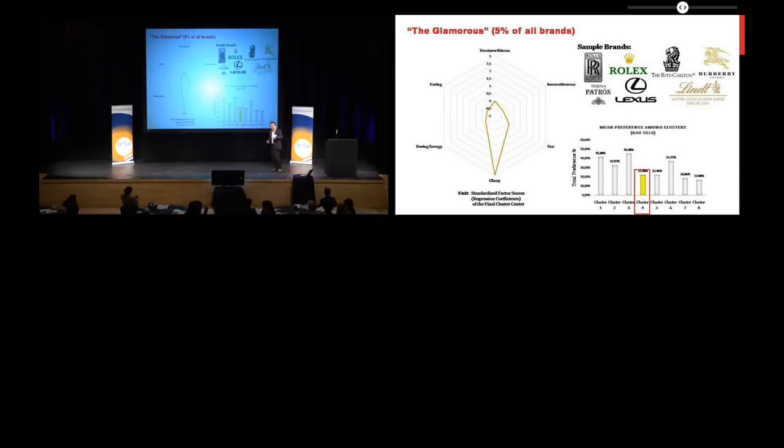The glamorous single-spike brands. These are the luxury brands of the world. Only 5 percent of them. They have a single peak here that you see on the classiness. Not too narrow; the width here is telling you they're not lacking too much on the dimensions, but they tend to be single-peak. Those ones are doing okay in terms of brand preference, but not outstanding.